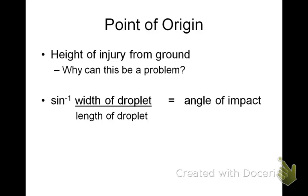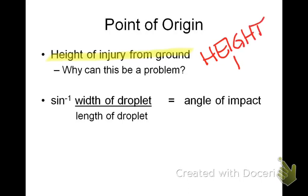Point of origin is the height of injury from the ground. This can be a problem because different people are different heights. If the height of the injury from the ground is five feet, that's going to be at my forehead, but for someone taller it could be their neck, chest, or arm. So if you don't know the height of the injured person, that can be a problem.